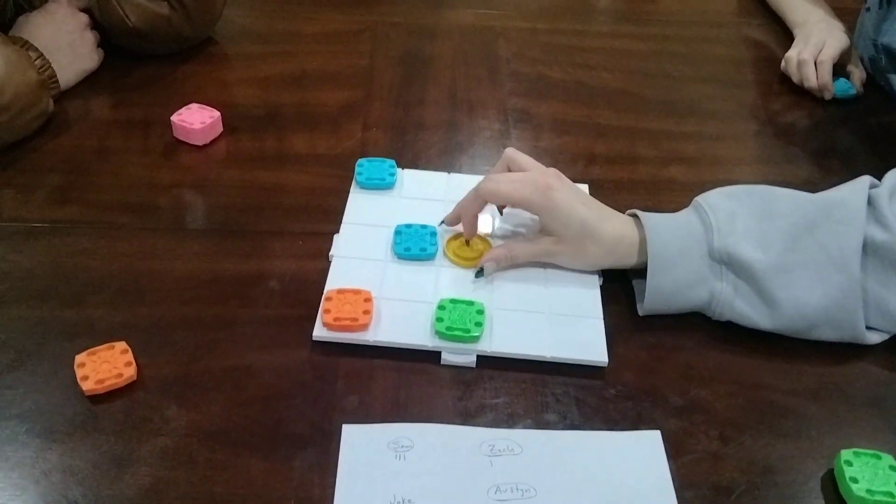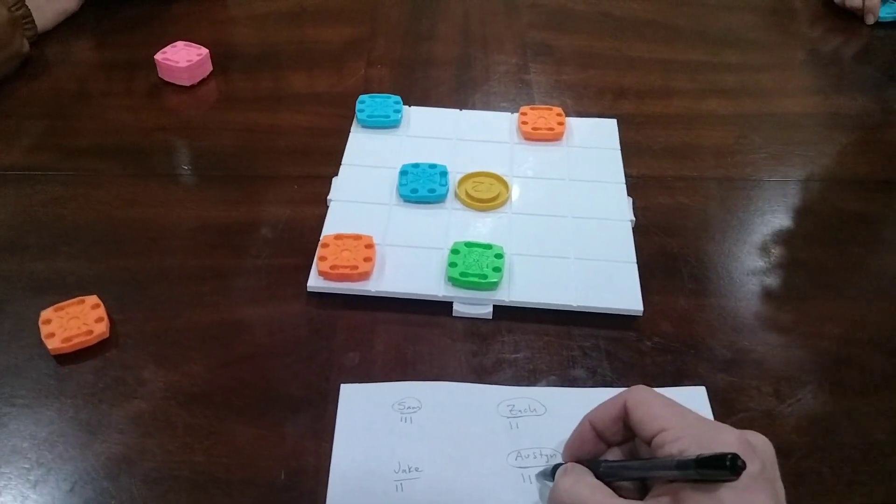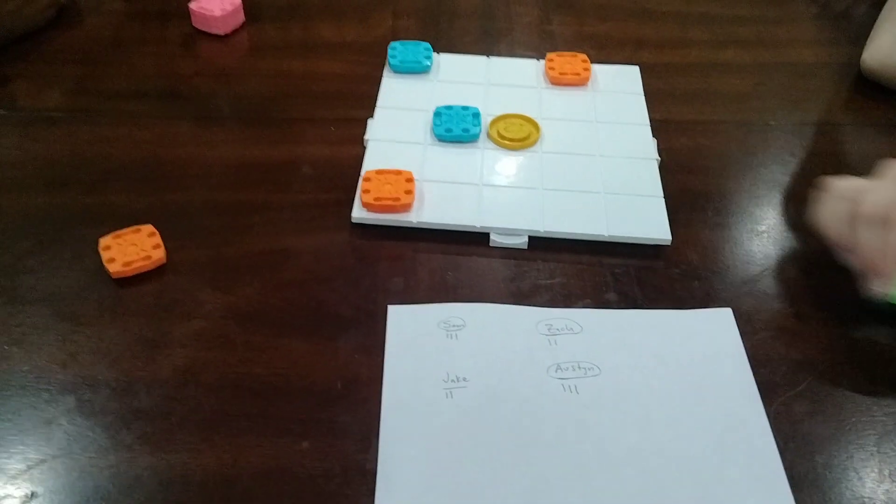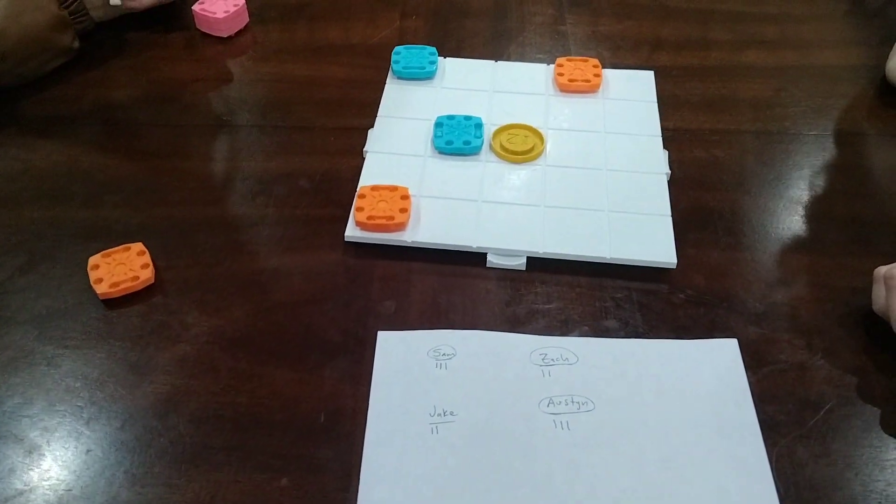So was that two points? Oh and that's in the middle that I missed. Yeah, so it's one for Zach, one for Austin. All right, so that means Austin got three points, so her pieces are out of the game. So this is all in it, so Jake and Zach.